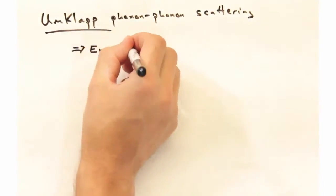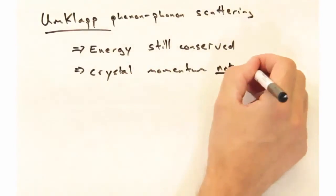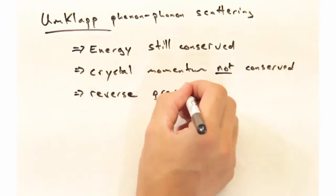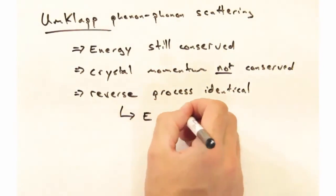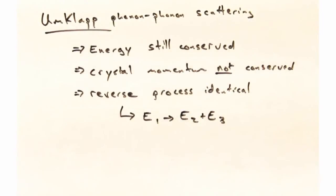So things to remember about umklapp scattering. The energy is still going to be conserved. The crystal momentum is not conserved. And I've demonstrated this for the phonon plus phonon combining together to create a new phonon. But the reverse process is identical in that you can have one phonon decay into two phonons, plus a reciprocal lattice vector.